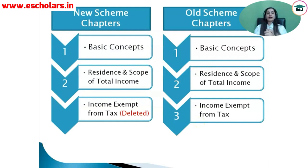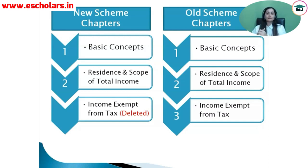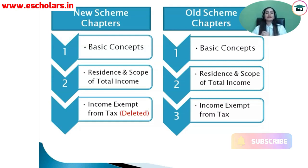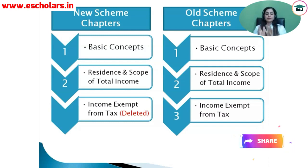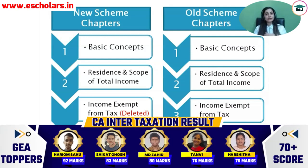Here we have the chapters of the new scheme and the chapters of the old scheme. If we compare to our old scheme, we have three chapters in module number 1: basic concepts, residence and scope of total income, and income exempt from tax. If we compare to our new scheme, there are two sections in module 1 — the first section is basic concepts and the second one is residence and scope of total income.